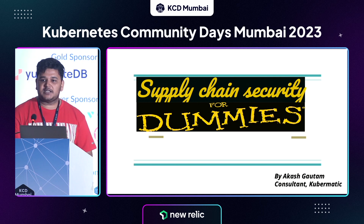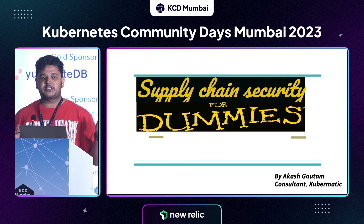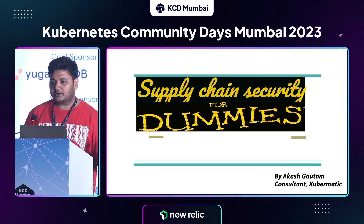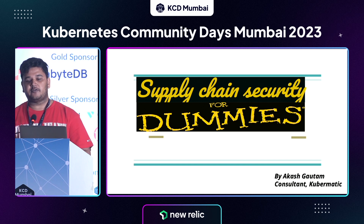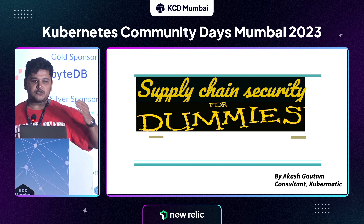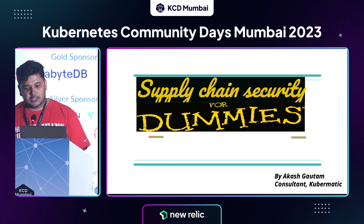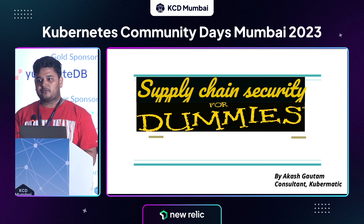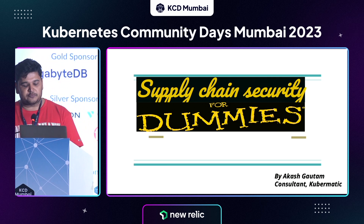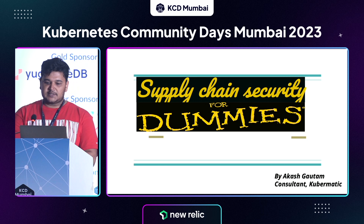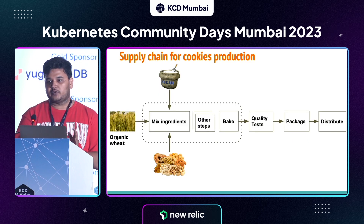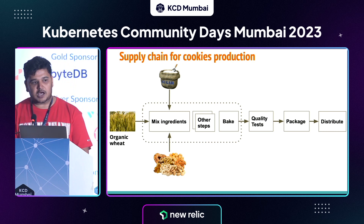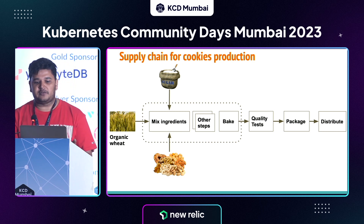Supply chain is traditionally associated with the manufacturing industry. Whenever we need to produce any goods, we bring all the raw materials together in our manufacturing unit, produce the goods, and then those goods get distributed to the end user or retailers. Let's start with an example of a manufacturing industry. Consider that we are a small company that produces organic cookies — how would our supply chain roughly look like?